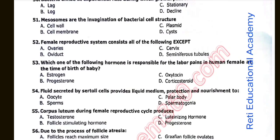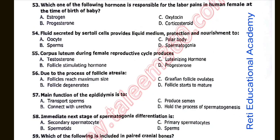Question number fifty-two: Female reproductive system consists of all of the following except D: Seminiferous tubules. Question number fifty-three: Which hormone is responsible for labor pains in human female at the time of birth? The correct option is C: Oxytocin. Question number fifty-four: Fluid secreted by Sertoli cells provides liquid medium, protection, and nourishment to. The correct option is B: Sperms. Question number fifty-five: Corpus luteum during female reproductive cycle produces D: Progesterone.